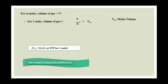STP stands for standard temperature and pressure. Standard temperature is 273 Kelvin and standard pressure is 1 atm. Now we have completed our gas laws. From the next session, we will be starting with the ideal gas equation. So this is all for this session. Thank you all — please don't forget to like, share, and subscribe.